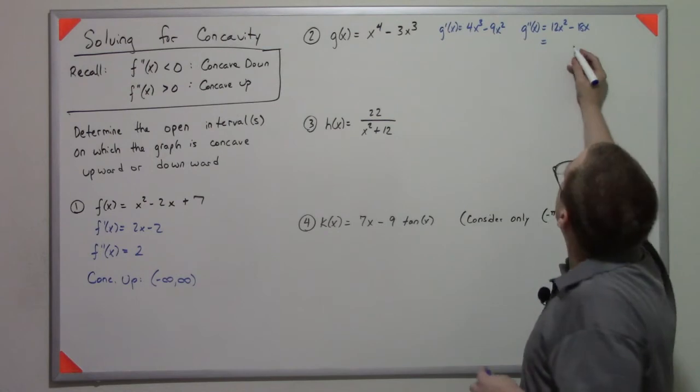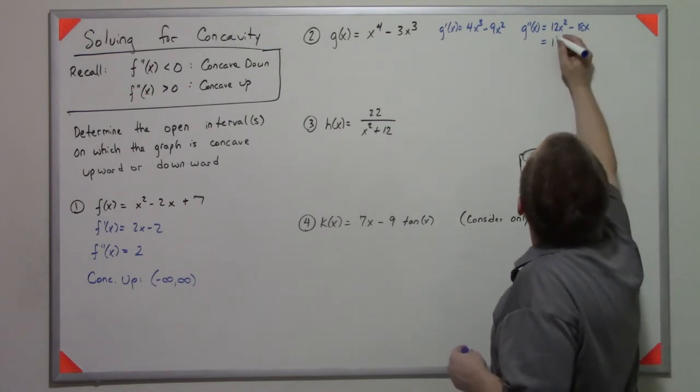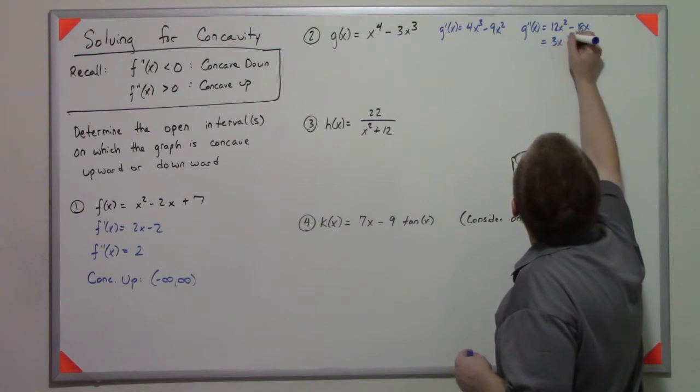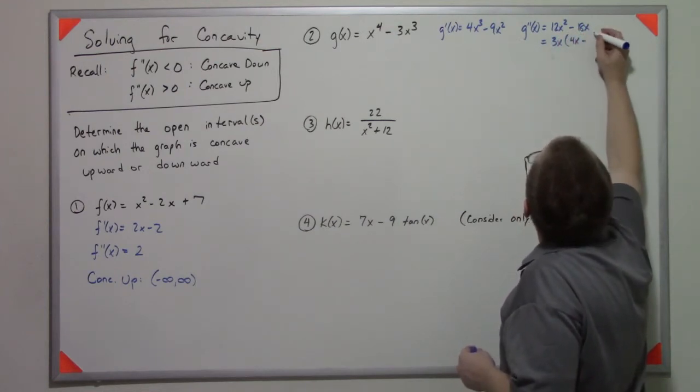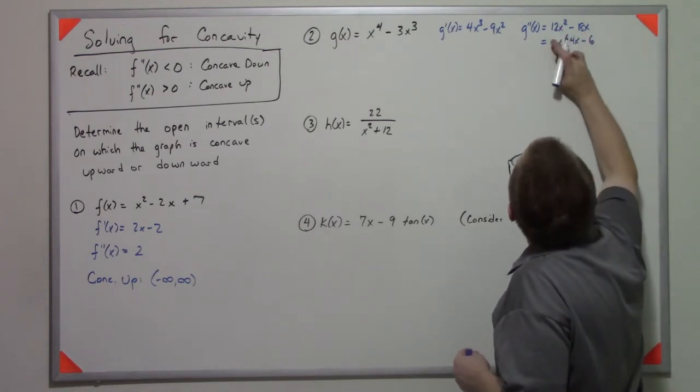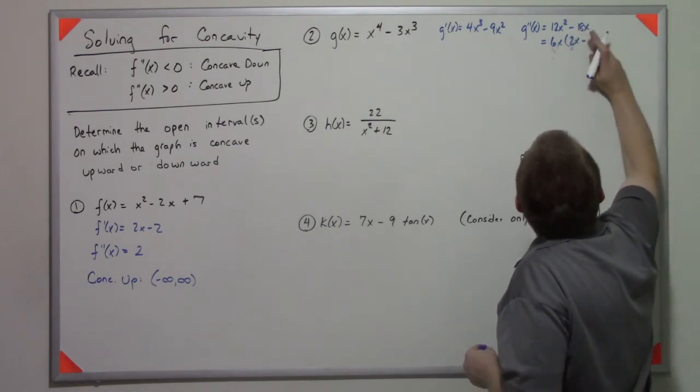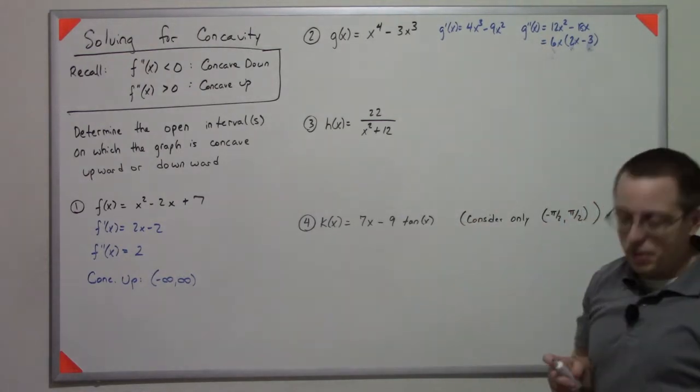Which I can then factor into... Pull out a 3x... 4x minus... I guess I can pull out a 6... 2x minus 3.